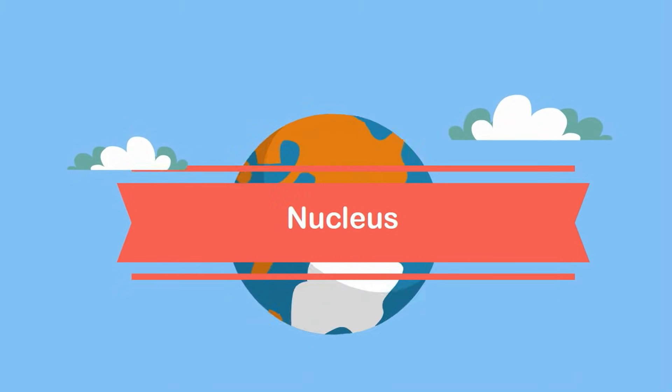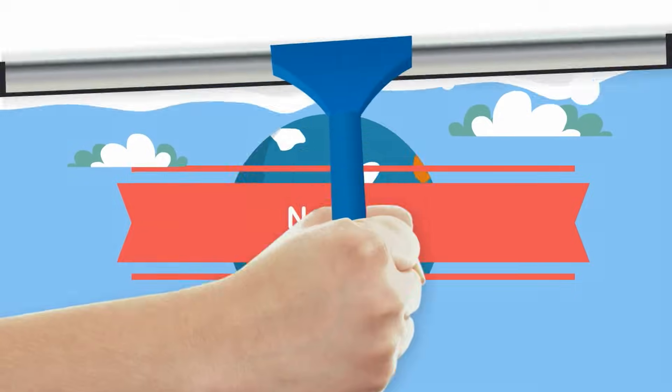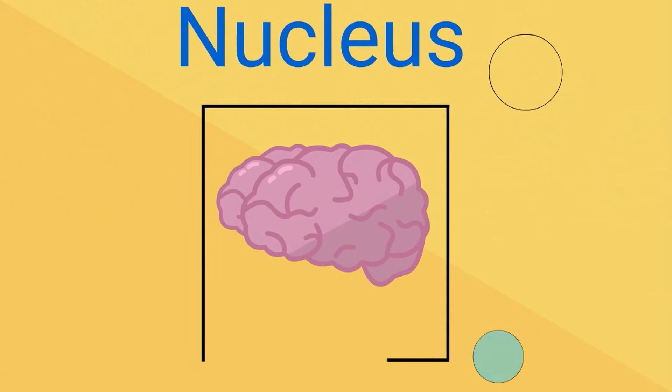Welcome to MooMooMath and Science. In this video I would like to look at the nucleus. I have always heard that the nucleus is the brain of the cell, but why is it the brain and what are the major parts of the nucleus?